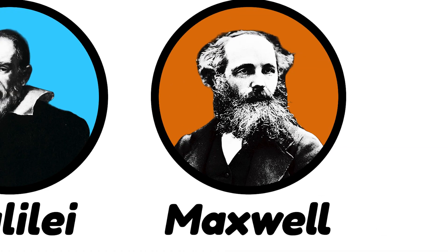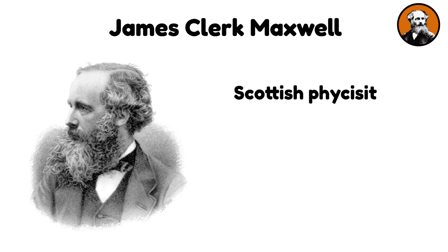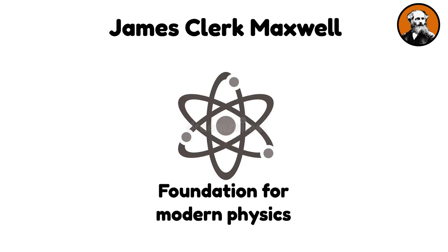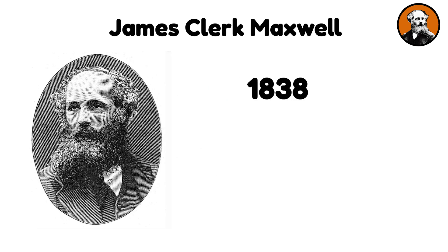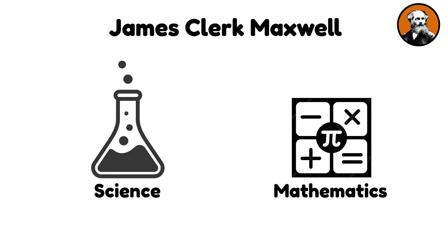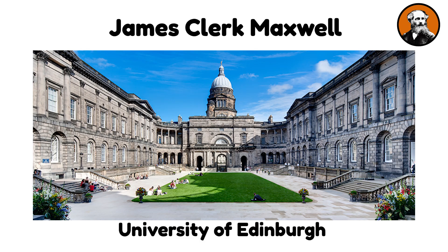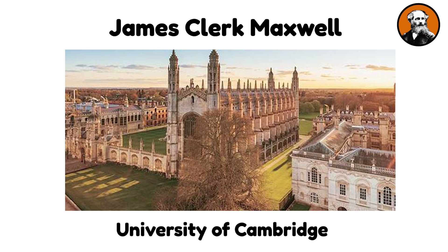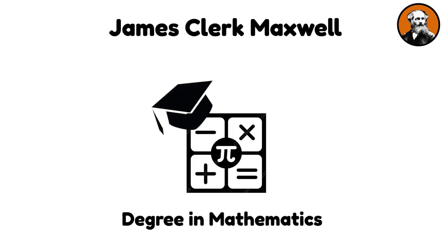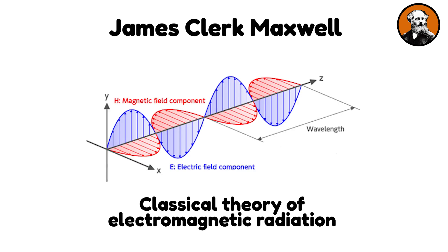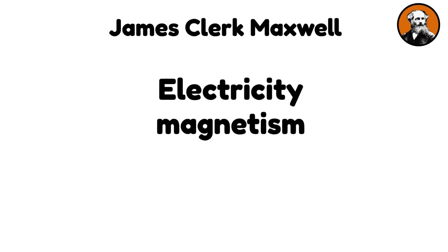James Clerk Maxwell was a Scottish physicist and mathematician whose groundbreaking work laid the foundation for modern physics. Born in 1838 Scotland, Maxwell exhibited an early aptitude for mathematics and science. He pursued his education at the University of Edinburgh and later at the University of Cambridge, where he graduated with a degree in mathematics. Maxwell is best known for formulating the classical theory of electromagnetic radiation, uniting electricity, magnetism, and light as aspects of the same phenomenon.